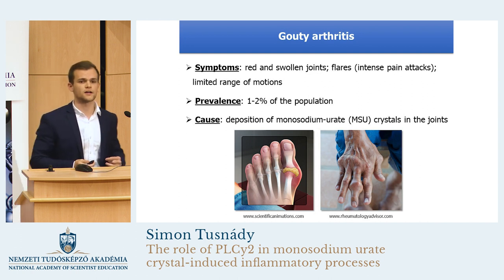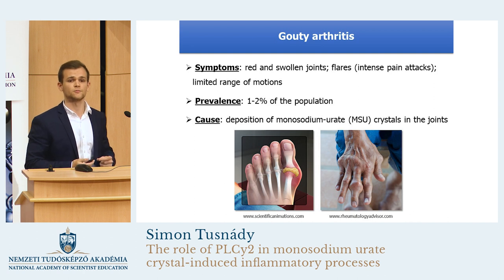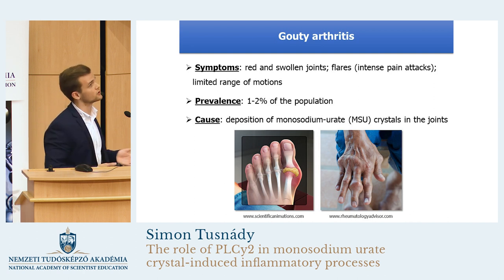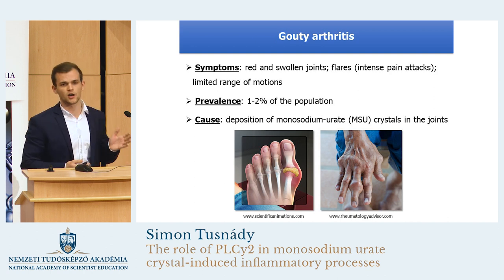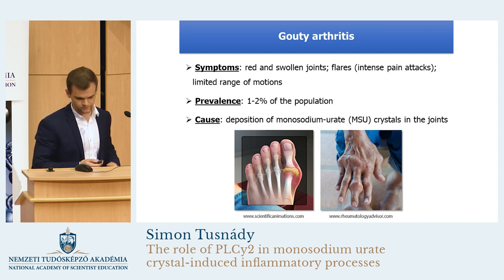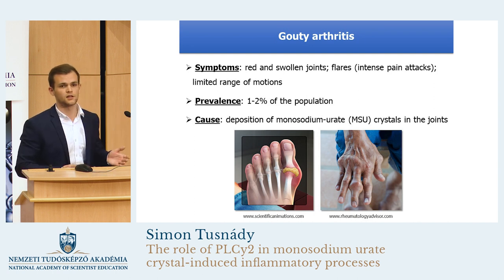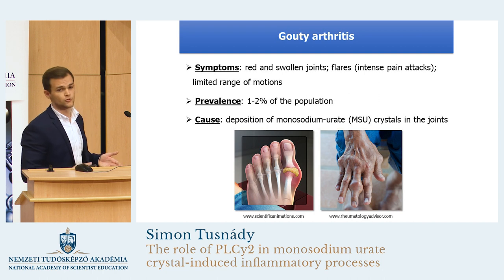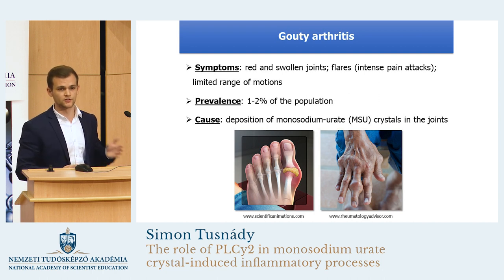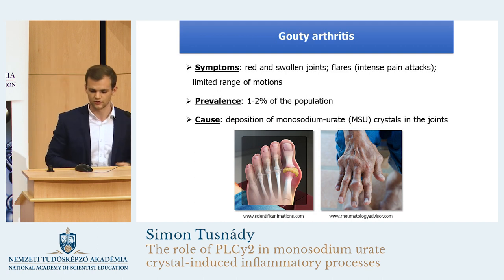Gout affects nearly one to two percent of the population, which means that just in Hungary, more than 100,000 people are affected with gout. Gout is due to the persistently elevated level of uric acid in the blood. At high levels, uric acid crystallizes and forms crystal deposits in the joints and in the surrounding tissues.